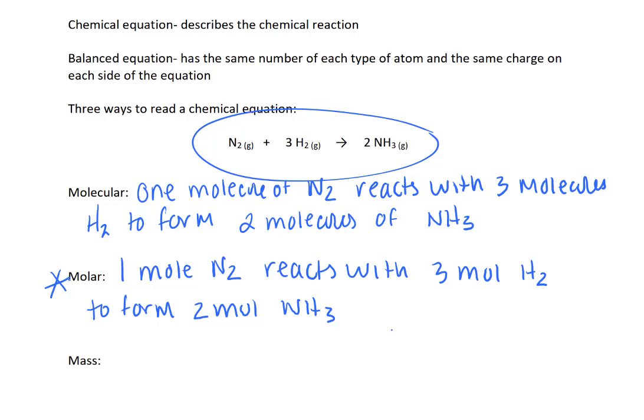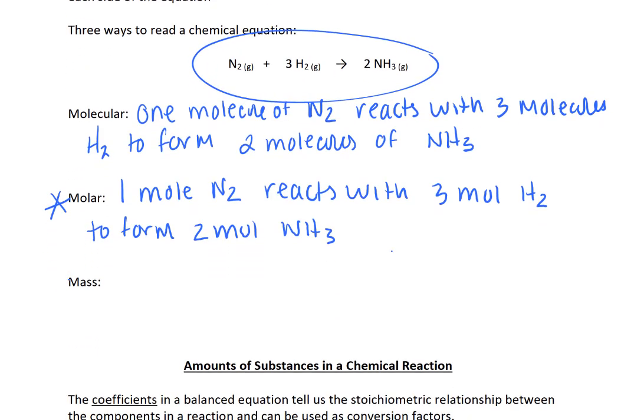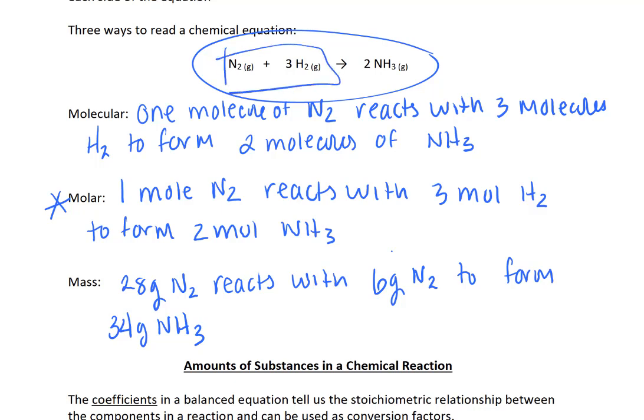The way that you've already seen is the mass way, which relates to law of conservation of mass. So in our law of conservation of mass, we say that 28 grams of N2 combines or reacts with 6 grams of H2 to form 34 grams of NH3. So this is using the law of conservation of mass, saying that the mass of everything on this side needs to equal the mass of everything on this side.